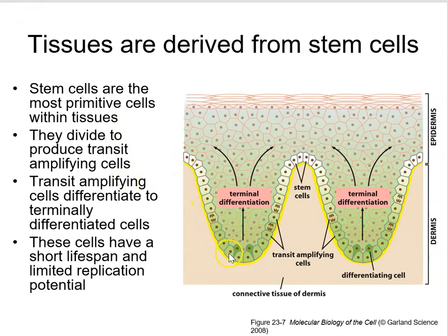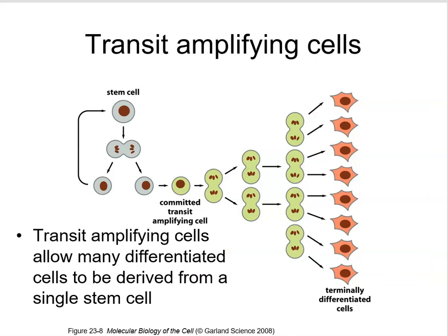Skin cells have to be constantly repopulated by a stem cell population that divides very infrequently but gives rise to transit amplifying cells, which are highly proliferative and repopulate the skin. A key feature of stem cells is asymmetrical division: one cell remains a stem cell, one becomes a committed transit amplifying cell that proliferates and gives rise to a new area of skin, thereby repairing skin while maintaining stem cell numbers.